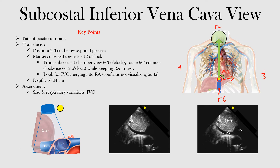So we're going from the three o'clock position and rotating the transducer to the 12 o'clock position. In doing so, we're going to look for the inferior vena cava merging into the right atrium. This helps to confirm that we're not visualizing the aorta, but rather the IVC going into the right atrium.